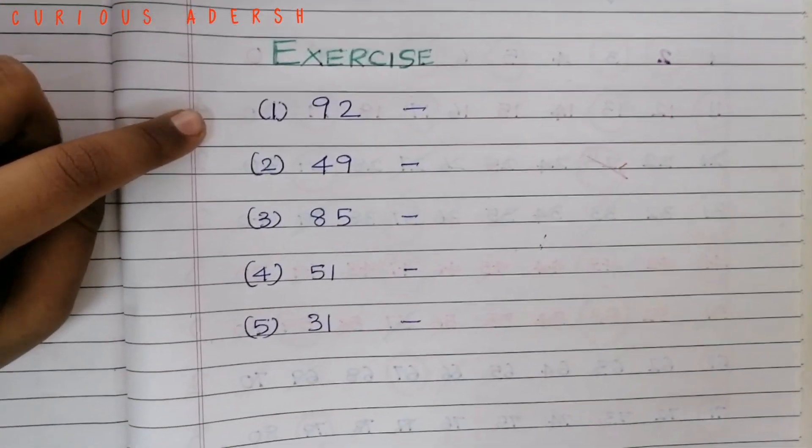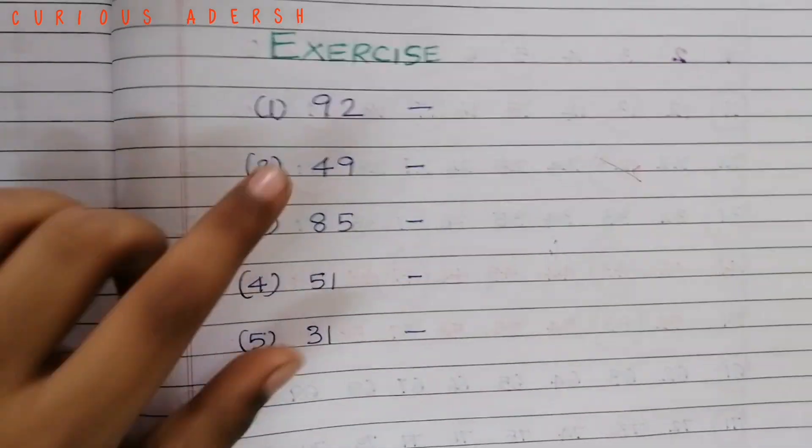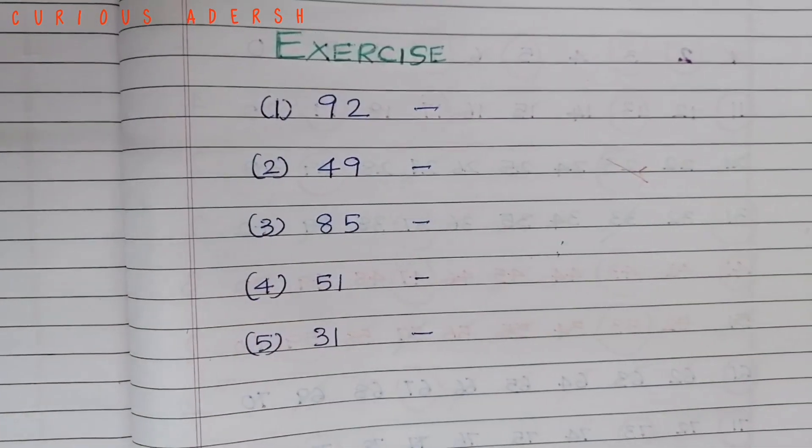Is 92 a prime number? No. Because it is an even number. A big no.